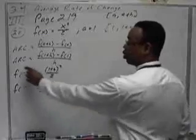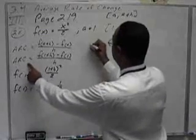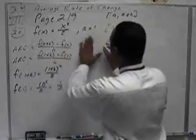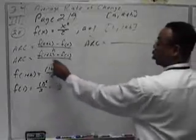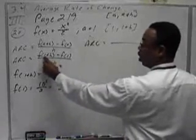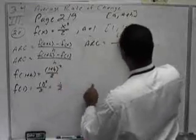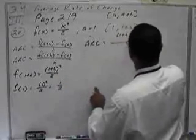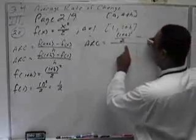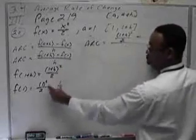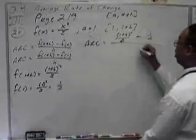Let's put all this together so we can get our average rate of change, which will be F of 1 plus H, which looks like this, all over 2, minus F of 1, which is 1 half, all over H.